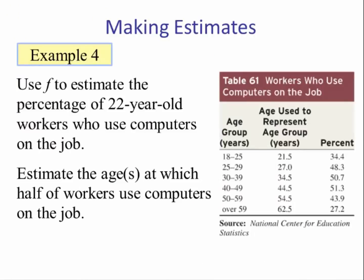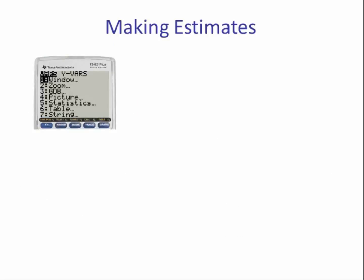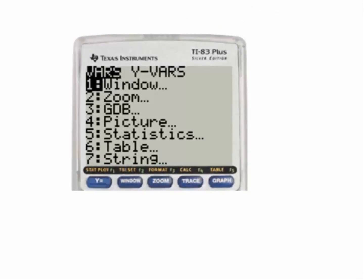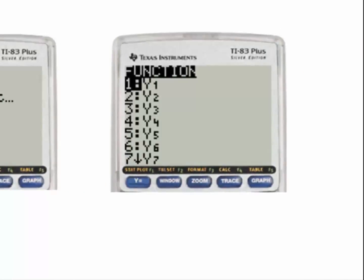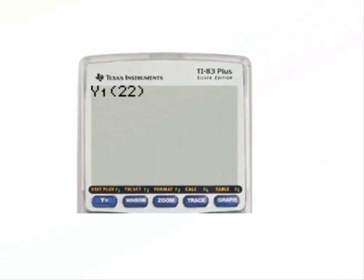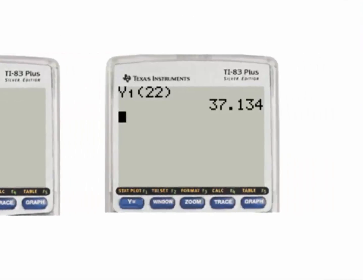Use f to estimate the percentage of 22-year-old workers who use computers on the job. Since we have the equation in Y1, if we hit the VARS key, then the YVARS, then Y1, this paste Y1 into the home screen. We now type in 22 and we get an output of 37.134. So according to the model for 22-year-olds, the estimated percentage of those who use a computer at work is about 37%.